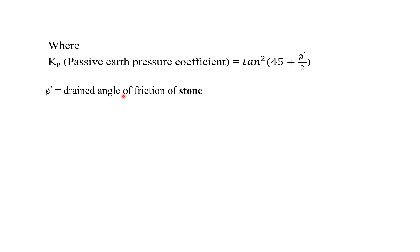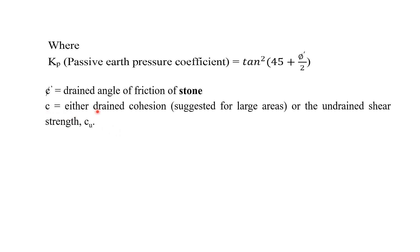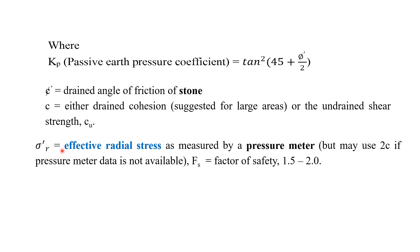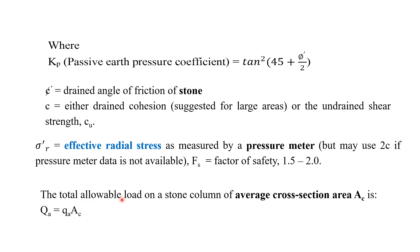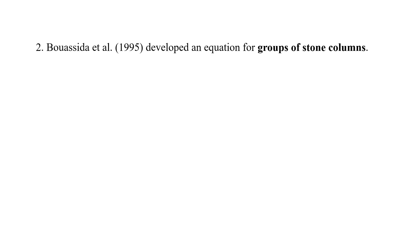φ' is the drained angle of friction of the stone aggregate. C is either the drained cohesion suggested for large area, or the undrained cohesion Cu. σ'r is the effective radial stress, measured using a pressuremeter. If a pressuremeter is not available, σ'r can be taken directly as 2c. The factor of safety varies from 1.5 to 2. The allowable load is equal to the allowable bearing capacity multiplied by the cross-sectional area of the stone column.